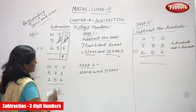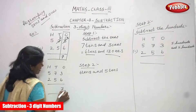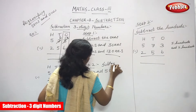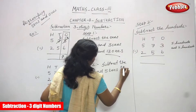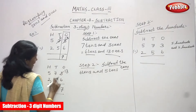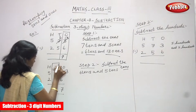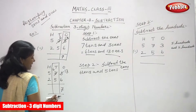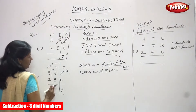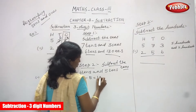Now I am going to do step 2. Write the same answer: 7 ones. Step 2 — subtract the tens. This 3 ones becomes 13 and this 7 tens becomes 6 tens already, as written in step 1. Now focusing on the tens place: what are the numbers in the tens place? 6 tens and 5 tens. I am going to subtract: 6 minus 5 equals 1 ten.